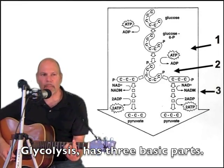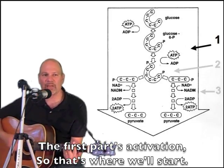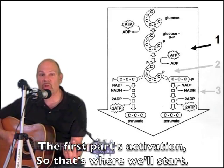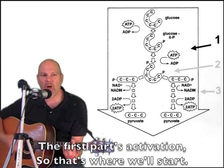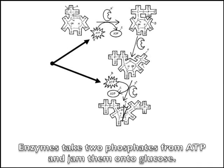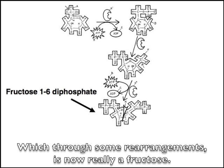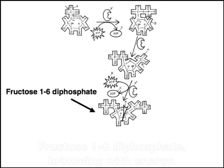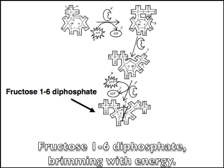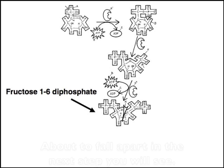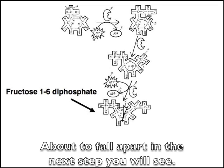Glycolysis has 3 basic parts. The first part's activation, so that's where we'll start. It takes 2 phosphates from ATP and jams them onto glucose. Through some rearrangements, it's now a fructose — fructose 1,6-bisphosphate — brimming with energy, about to fall apart in the next step you'll see.